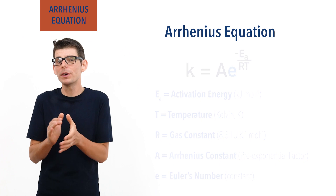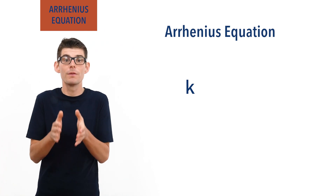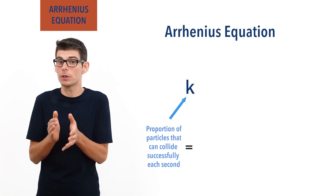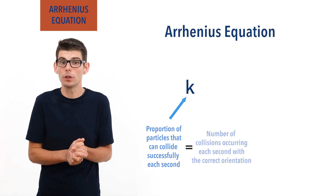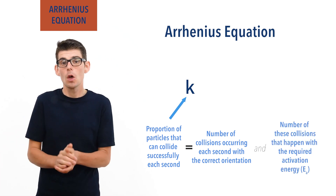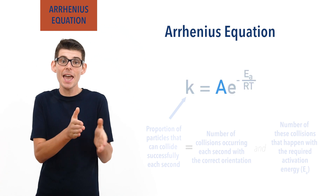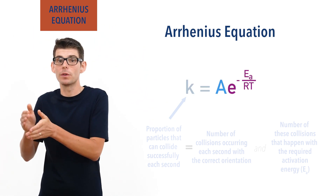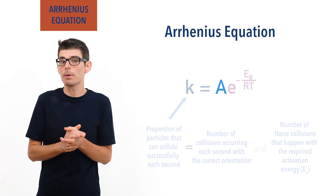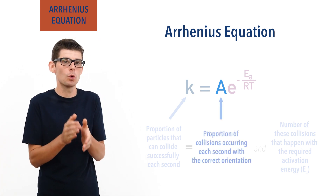The whole point of the rate constant k is essentially to tell us the proportion of reacting particles that can collide successfully each second. This proportion is based on the number of collisions occurring each second with the correct orientation, and the number of these that have the required activation energy. There are actually two main sections to the Arrhenius equation: A, and e to the power minus Ea over RT. The A part, the Arrhenius constant, describes the proportion of collisions between reactant particles happening each second with the correct orientation.